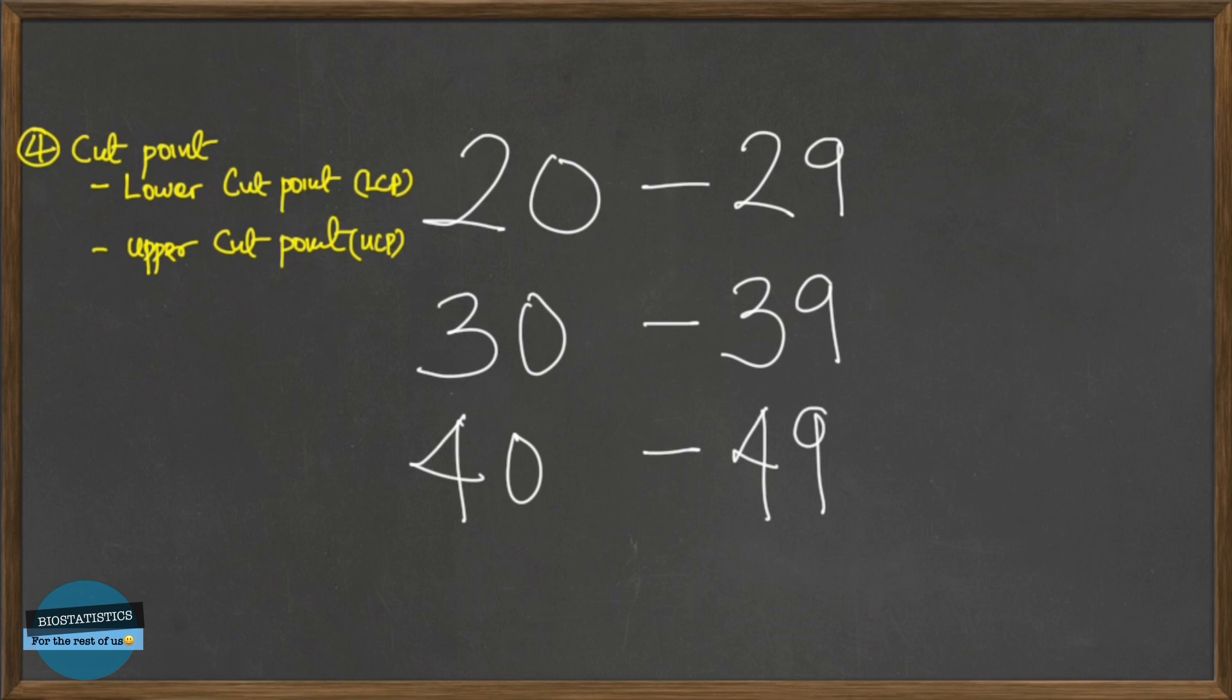So let's look at these classes properly. We have class 1, class 2, and class 3. So the lower cut point for class 1 is the lowest value that can go into class 1, which is 20. But the upper cut point for class 1 is the lowest value that can go into class 2. That's the upper cut point for class 1. And guess what? It's the same lower cut point for class 2.